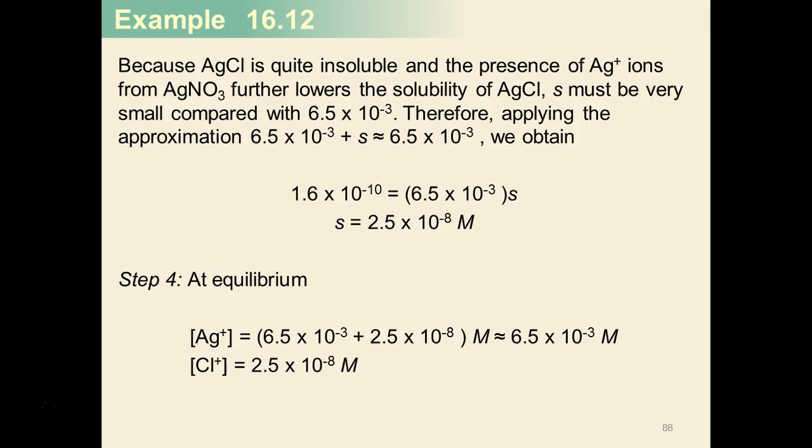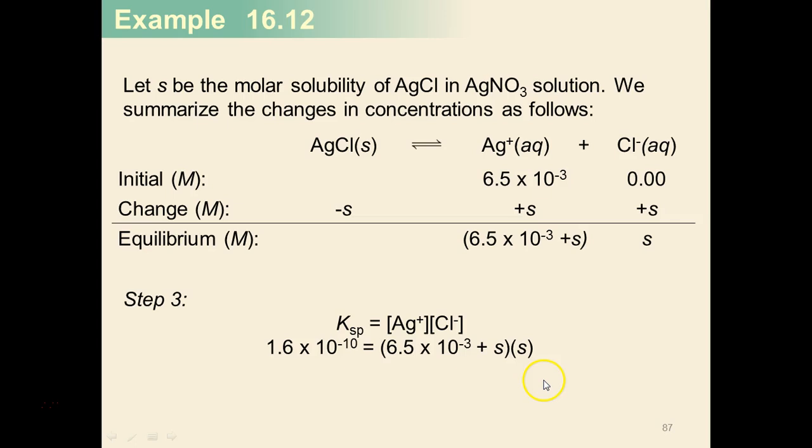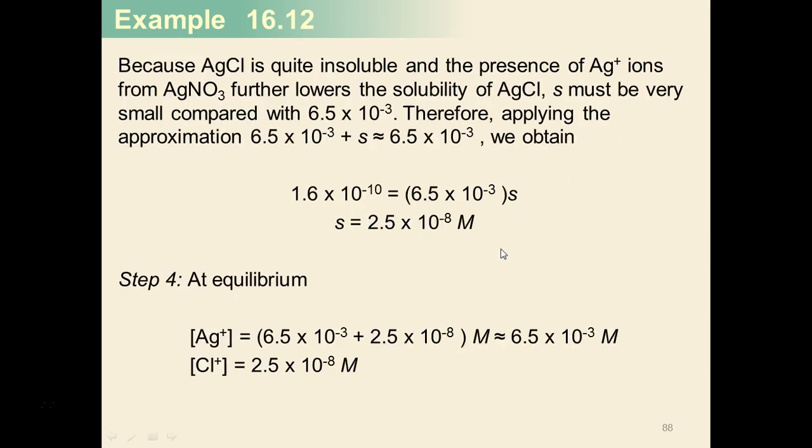So because AgCl is quite insoluble, and the presence really further lowers the solubility, we can assume, just to make our math easier, that this s is so small compared to 6.5 times 10 to the negative third, we can omit it. So we solve for s using that approximation.